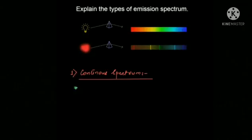The key thing about continuous spectrum is that it is continuous in nature with no separate boundaries between colors. This spectrum is distributed on a dark background, and that is why it is called a continuous spectrum.